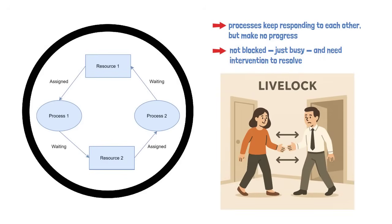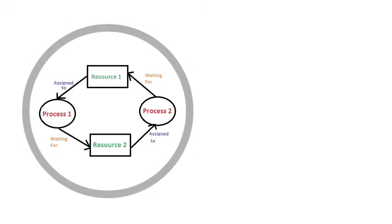Imagine two people meeting in a hallway, each trying to be polite by moving aside to let the other pass. They both step to the same side. Notice the problem? And step to the other side together again. They keep moving but never get past each other. That's a livelock.